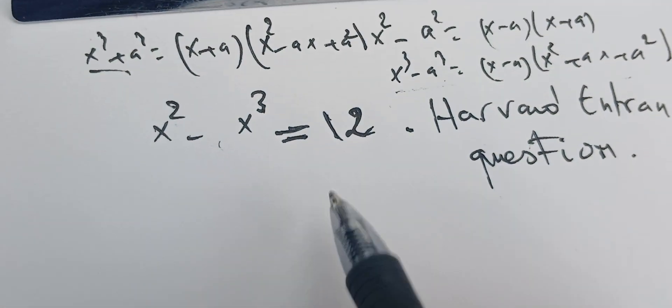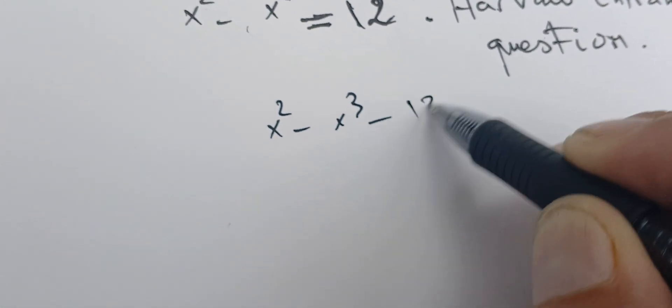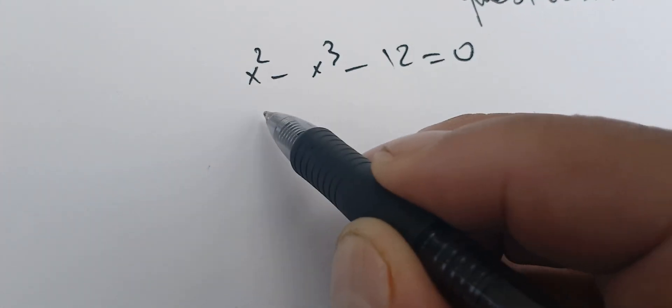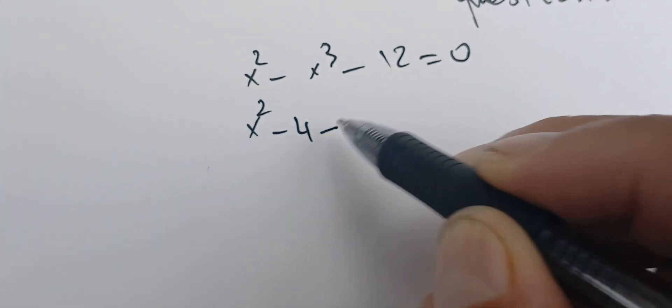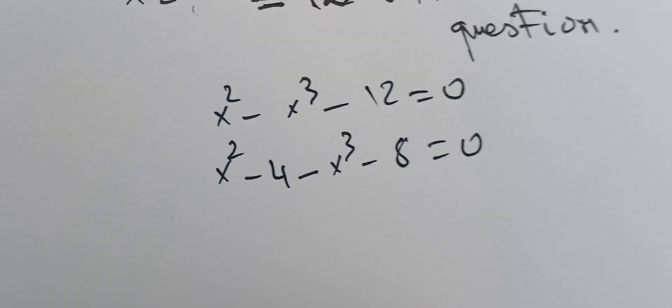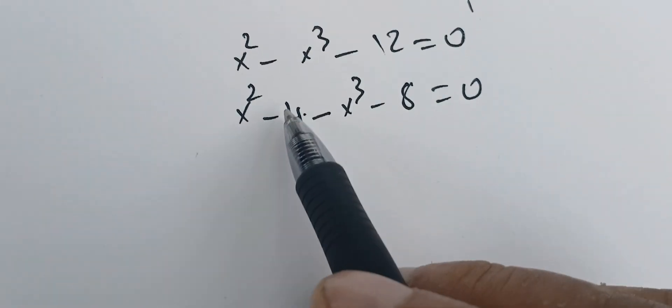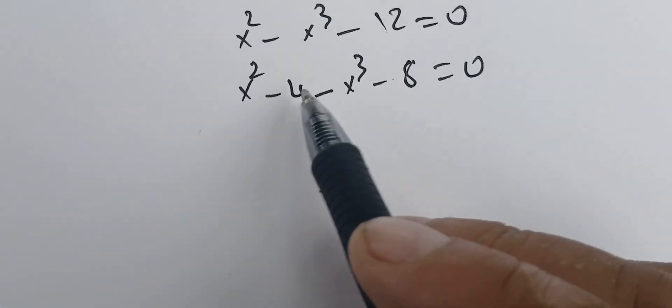Let's rewrite this equation as x squared minus x cubed minus 12 equals zero. We're going to decompose 12 as x squared minus 4 minus x cubed minus 8. So 12 is 4 plus 8, with the minus we have minus 4 minus 8.